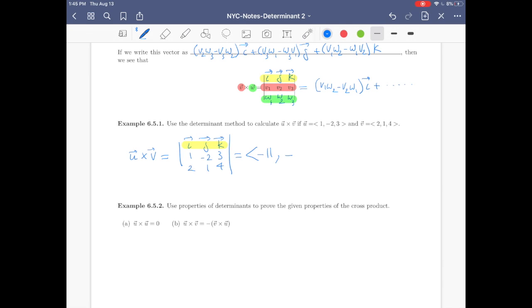So becomes plus 2. And the last one is you do basically 1 minus minus 4. Okay, so 1 minus minus 4 is 5. That's it. Of course you can write this as -11i plus 2j plus 5k.